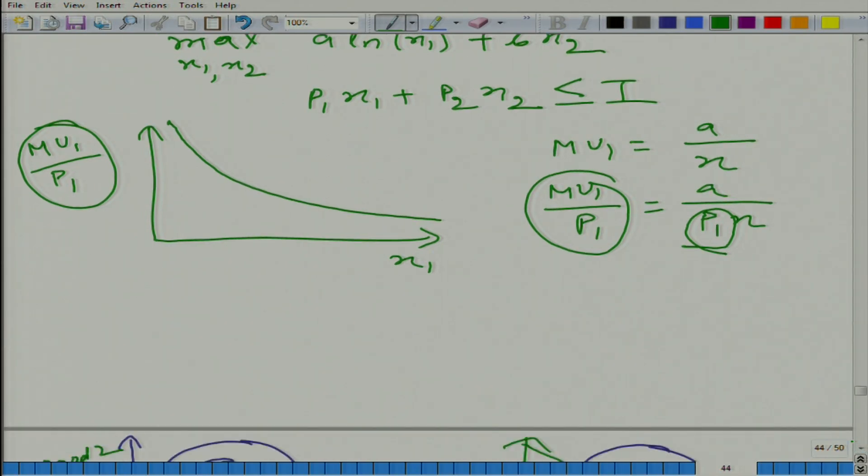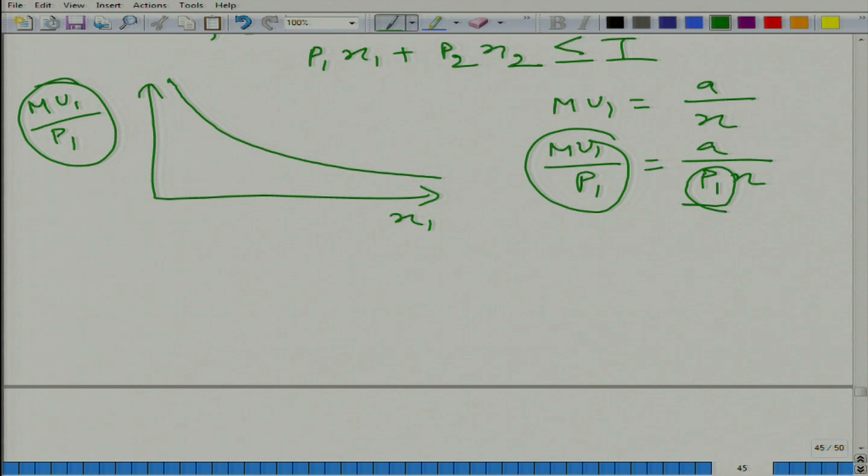And how about, let us calculate mu2 divided by p2. Again, this is for good 2, and what do we get? How much is mu2? b. b divided by p2. So how will it look like? It is the same - straight line, it is a straight line, horizontal line.